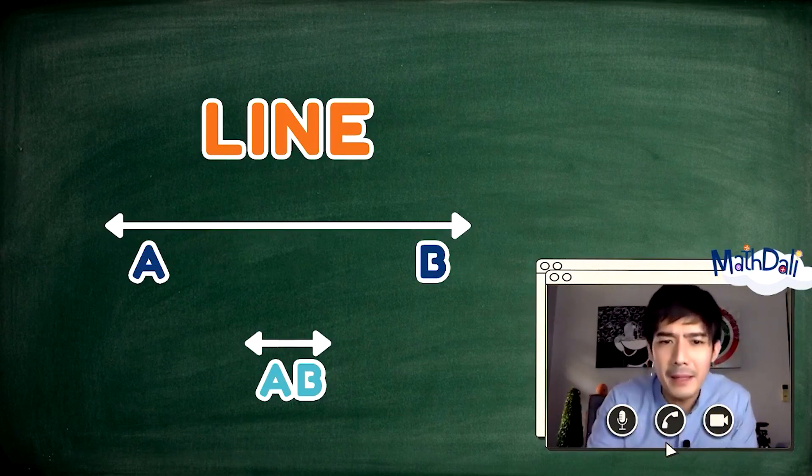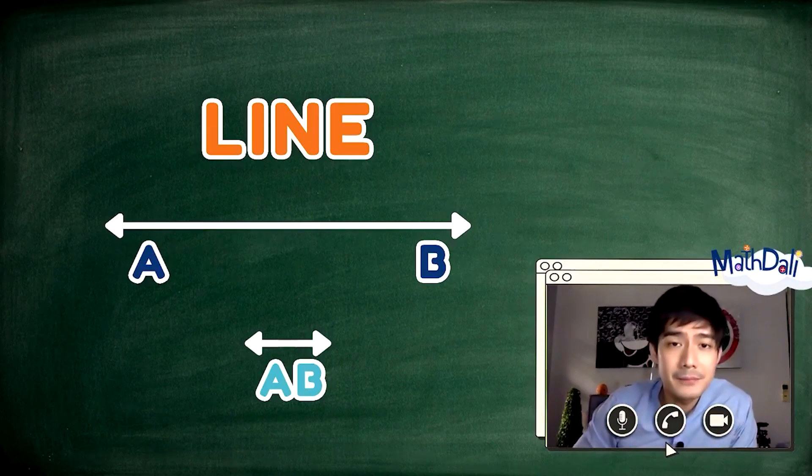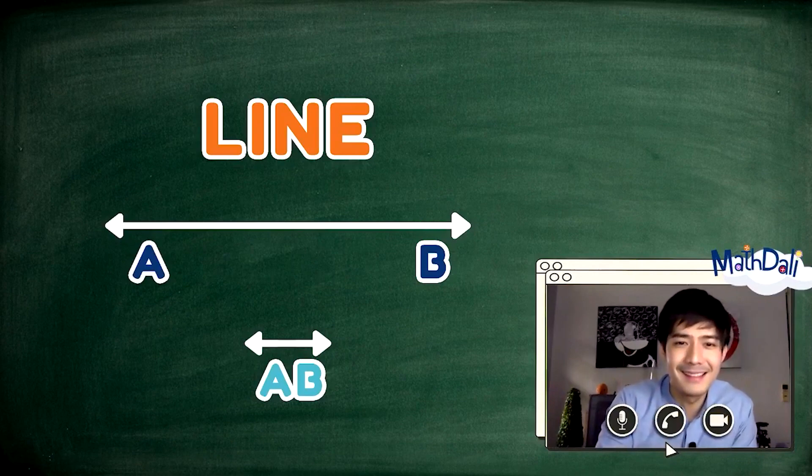Paano naman kapag marami na ang mga linya? May tawag din sa ugnayan ng mga ito. Para malaman natin, panoorin natin ito. Kapag may dalawa o higit pang line sa isang lugar, may mga tawag sa ugnayan ng mga lines.